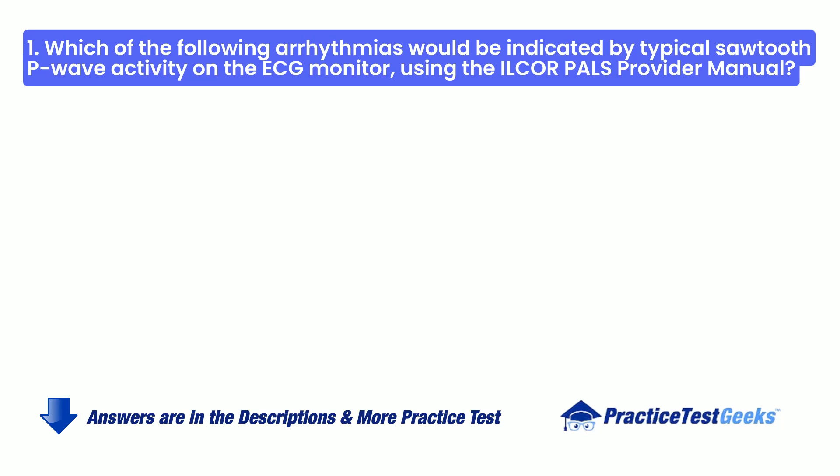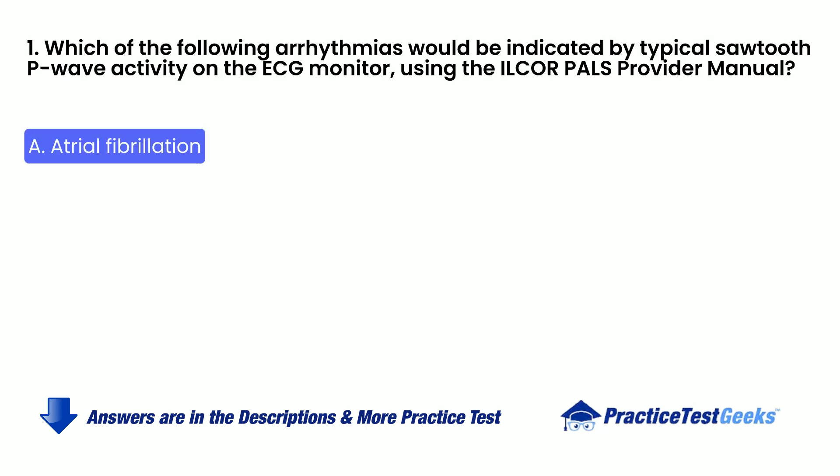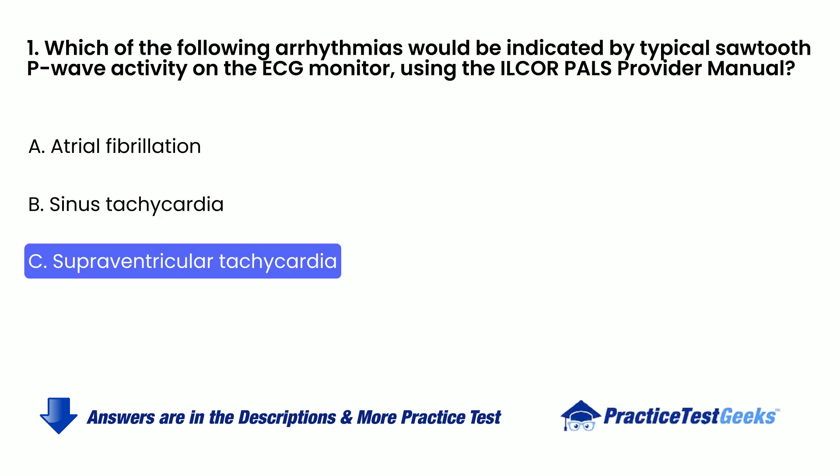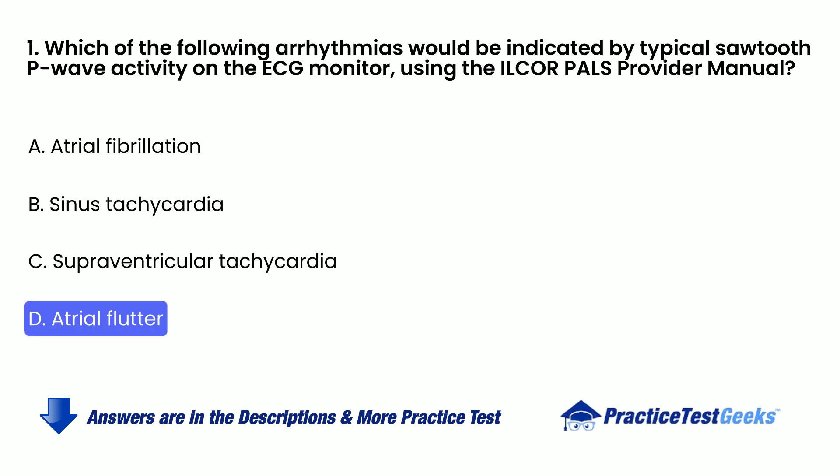Which of the following arrhythmias would be indicated by typical sawtooth P-wave activity on the ECG monitor, using the PALS Provider Manual? A. Atrial Fibrillation. B. Sinus Tachycardia. C. Supraventricular Tachycardia. D. Atrial Flutter.